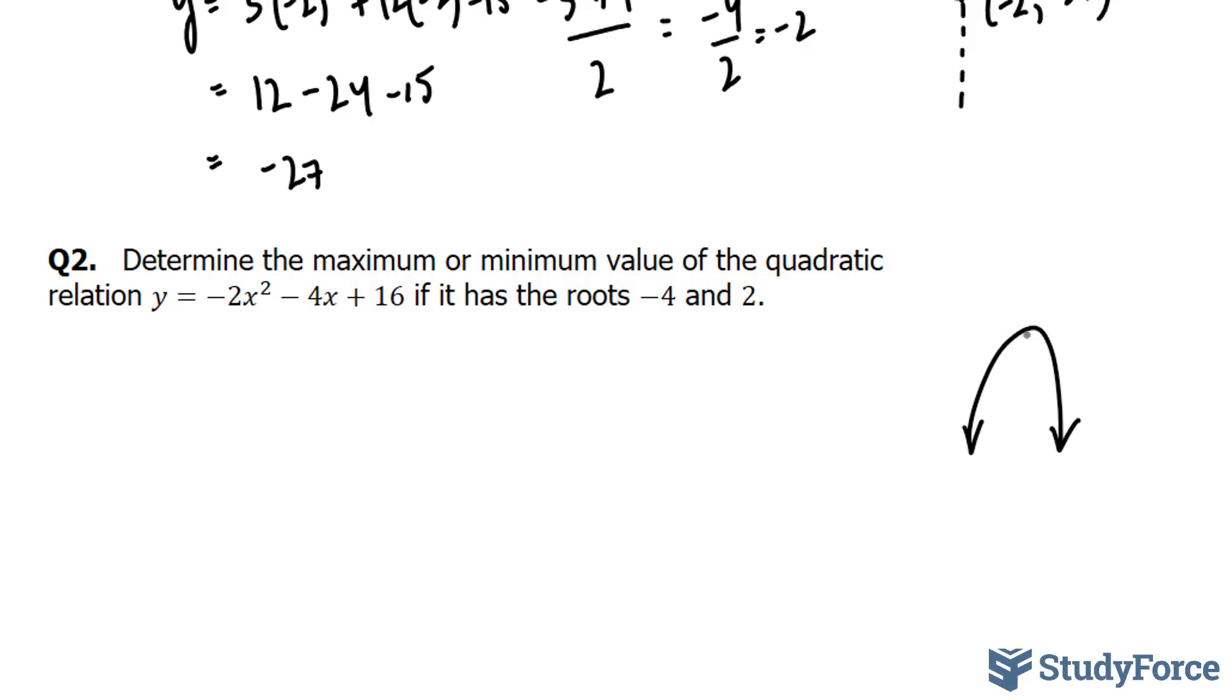So we have our quadratic, and we know we're going to have a maximum. We've also been given the roots, luckily for us. So I'm going to take the average of those two roots. Negative 4 plus 2 is equal to negative 2 over 2 gives us negative 1.